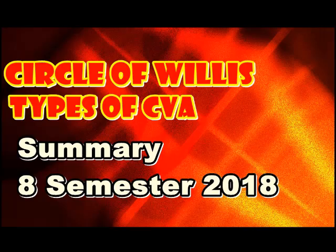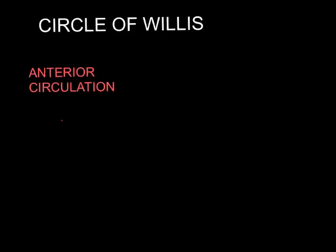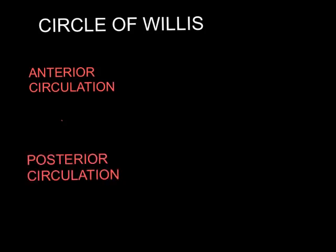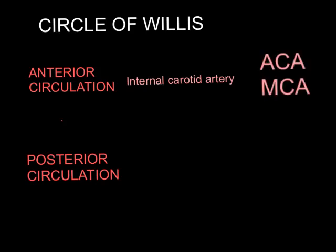Hello everyone. We will be seeing the lecture summary of Circle of Willis and types of strokes. The Circle of Willis is formed from the branches of internal carotid and the vertebral arteries. The anterior circulation from the internal carotid artery gives rise to the anterior cerebral and middle cerebral artery.